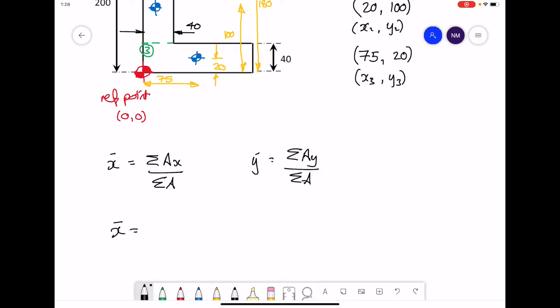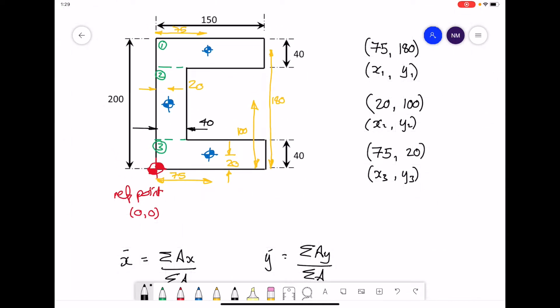Taking the first of these, x-bar, in this example, we have three rectangles. So our formula is A1x1 plus A2x2 plus A3x3 over the total cross-sectional area, A1 plus A2 plus A3. The one thing to note, for the shape, rectangle 1, 150 by 40 are the dimensions. For rectangle 2, 40 wide, the height for the second rectangle is 120. 200, take off 40 from the top, take off 40 from the bottom, gives you 120. So we have the dimensions for each of the three rectangles.